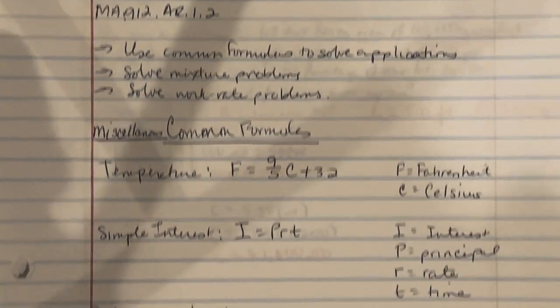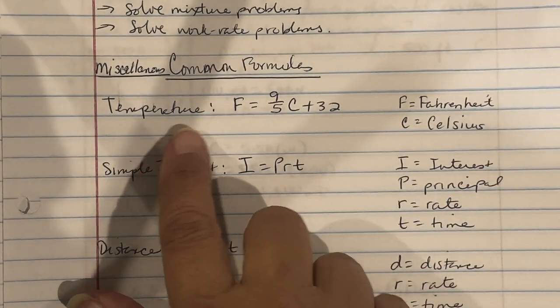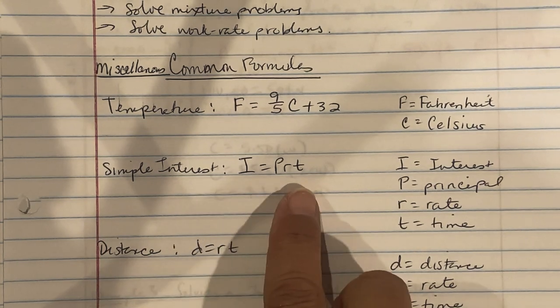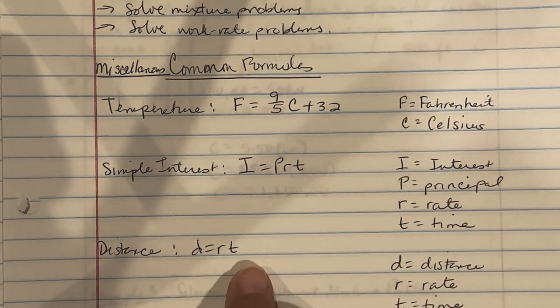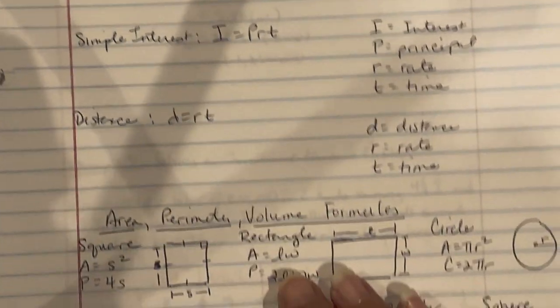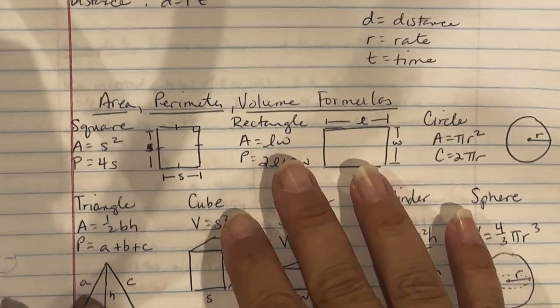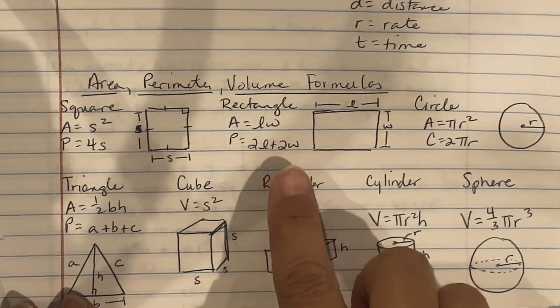Some miscellaneous formulas that we have here are the formula for temperature, simple interest, distance, and then we go into our area, perimeter, and volume formulas. So we have our square, the rectangle, our circle, and triangle.